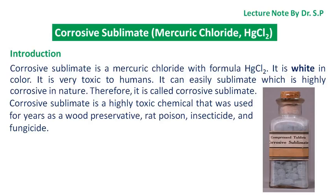Corrosive sublimate is a mercuric chloride with formula HgCl₂. It is white in color and it is very toxic to humans. It can easily sublimate, which is highly corrosive in nature. Therefore, it is called corrosive sublimate.